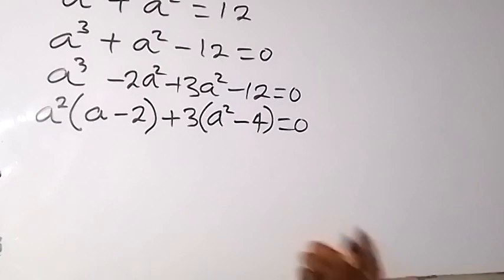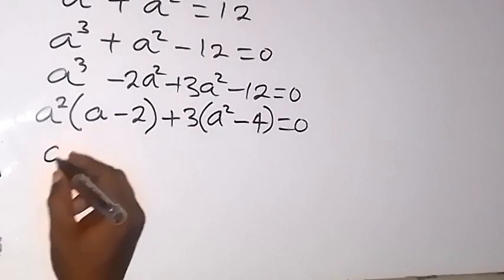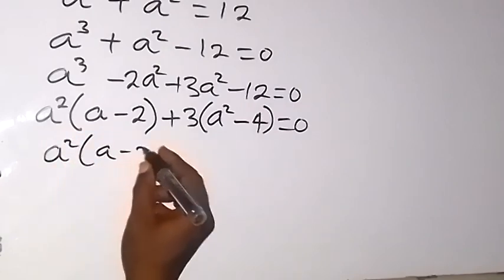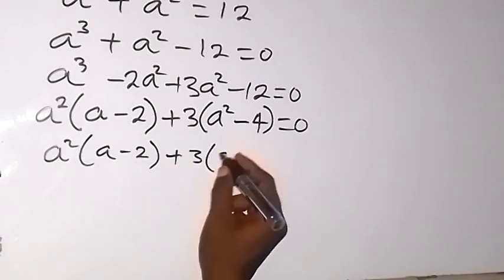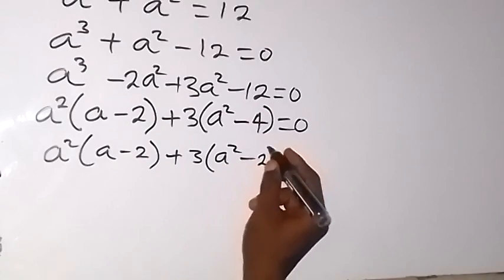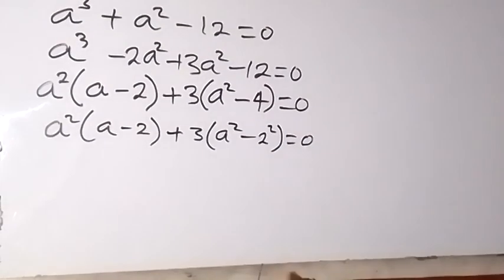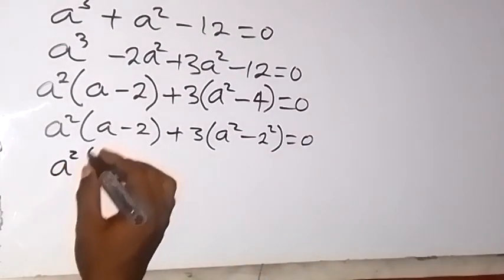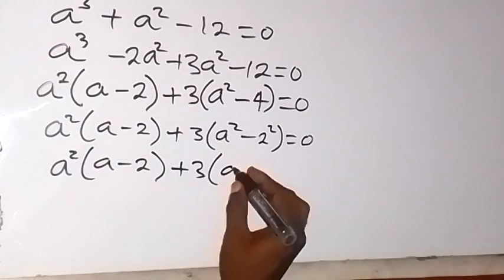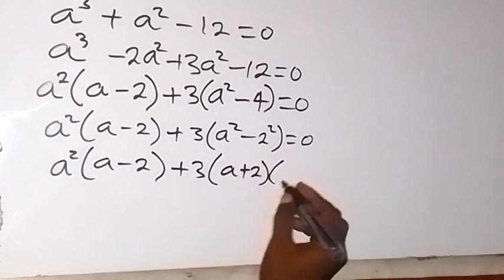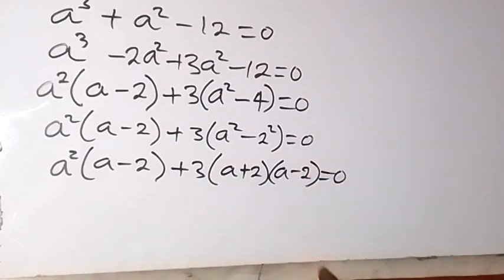From there, we can rewrite this using difference of two squares. We have a squared times (a minus 2), then plus 3 times (a squared minus 2 squared), which equals 0. Applying the difference of two squares factoring, we have a squared times (a minus 2), plus 3 times (a plus 2)(a minus 2), which equals 0.